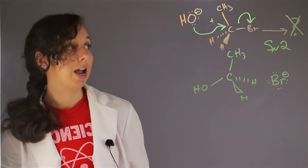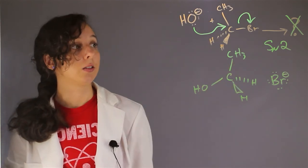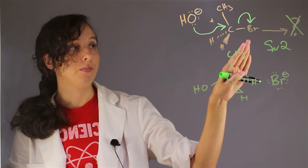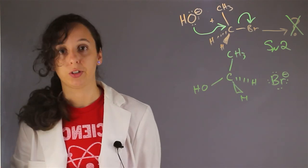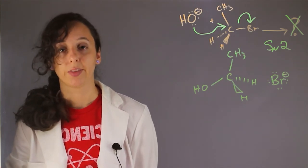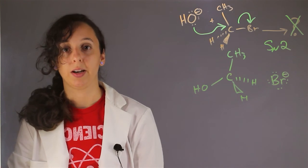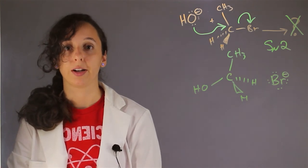And so this is how I predicted my product. I looked at what I had, identified what would change and stay the same. I thought about the different reactions that I learned, and then I drew a mechanism. I'm Robin Higgins, and this has been a chemistry exercise in predicting the products of a reaction.